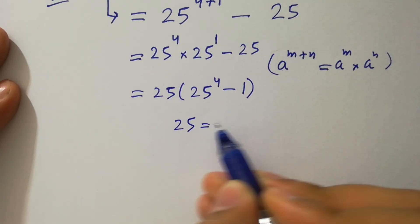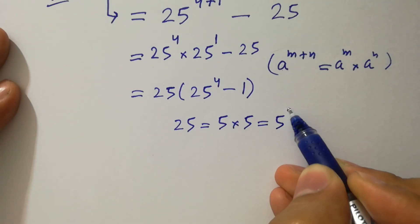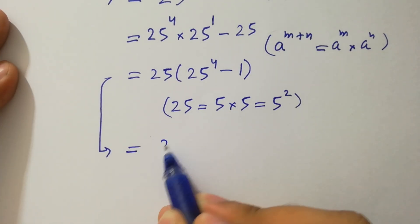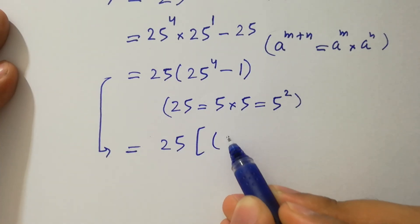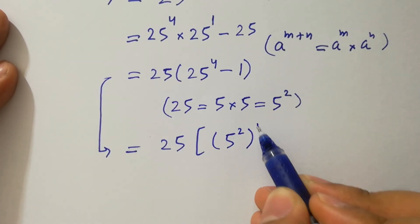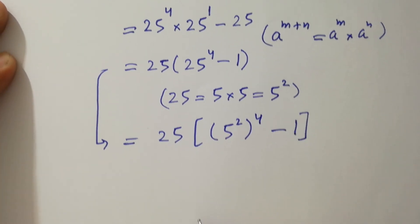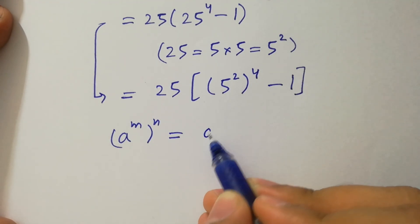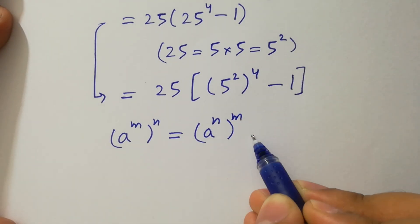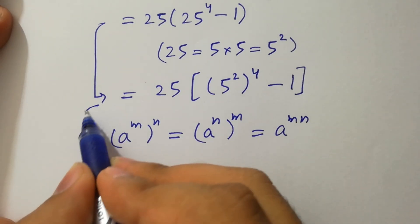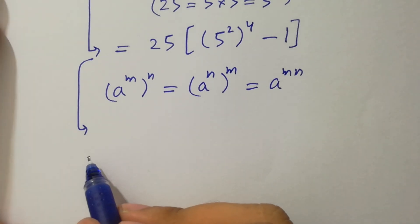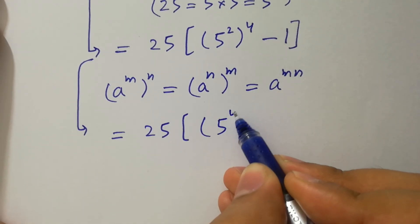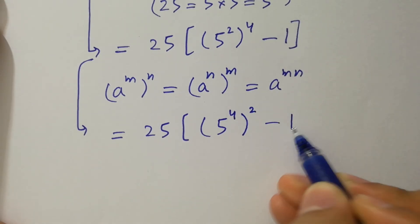Since 25 equals 5 times 5, which is 5 squared, then we write 25 times (5 squared) to the power 4, minus 1. Since a to the power m to the whole power n equals a to the power mn, we can write it as 25 times 5 to the power 4 to the whole power 2, minus 1.